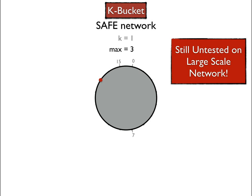In the SAFE network case, we introduce an additional parameter called max, which represents the maximum number of nodes that are stored in the routing table. And the routing table is constructed in two phases.